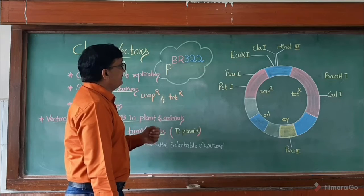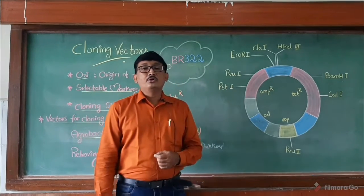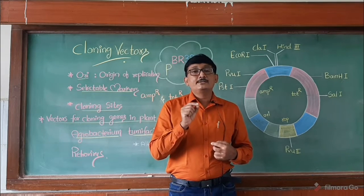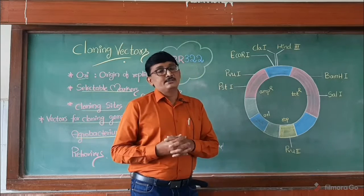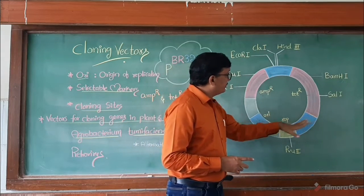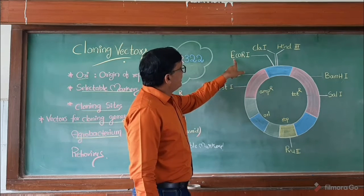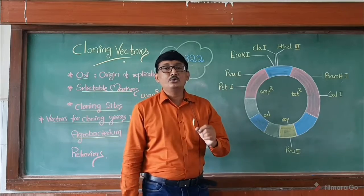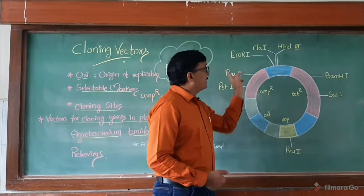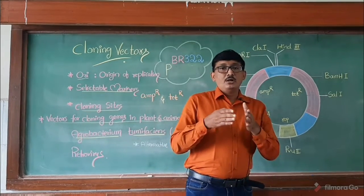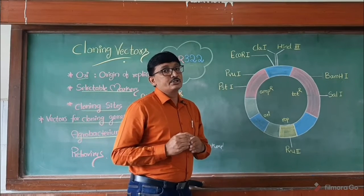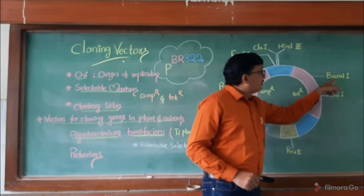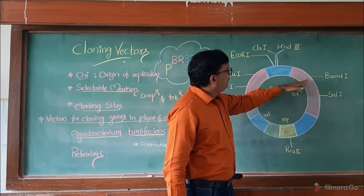Another significant character of PBR 322 is the cloning sites. The cloning site means a particular site where we can introduce or insert a desirable gene. In PBR 322 you can see cloning sites such as PST1, PVU1, ECOR1, CLA1, HIND3, and BAMH1. These are restriction endonuclease enzymes. When a particular restriction enzyme is used, it cuts the plasmid in that particular region — for example, BAMH1 will cut PBR in its specific region.